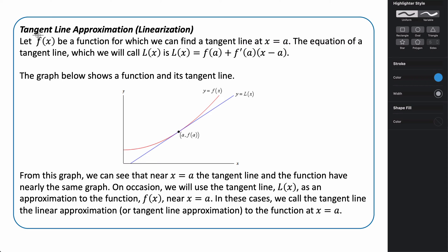The first thing we're going to look at is something called tangent line approximation, also known as linearization. We use tangent line approximation when we want to estimate the value of a function using the value from the tangent line. Let f(x) be a function for which we can find a tangent line at some point x equals a.